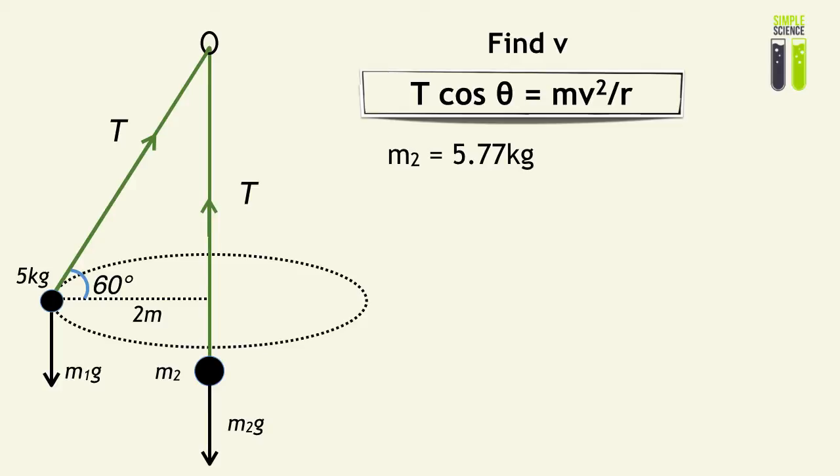We know that M2 equals 5.77 kilograms. We know that T equals M2g, and therefore, T equals 56.6 newtons. We can then combine this into the formula above.